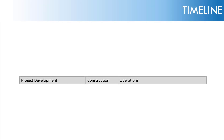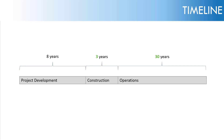Moving on to the timeline: we have project development, then construction, then operations. Project development has been going on for eight years, construction is proposed to take seven years, and operations is 25 years. For the simplified model we're going to assume construction is three years, and we're going to explore 30 years for operations, because that's what it actually is for the third runway.